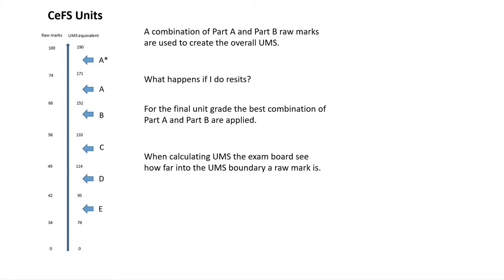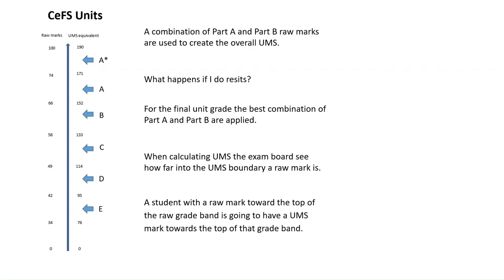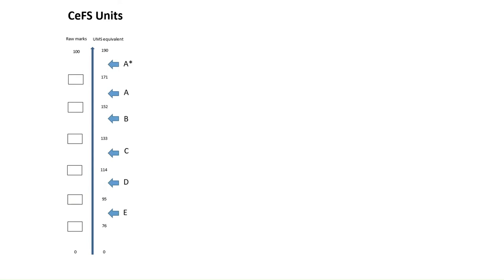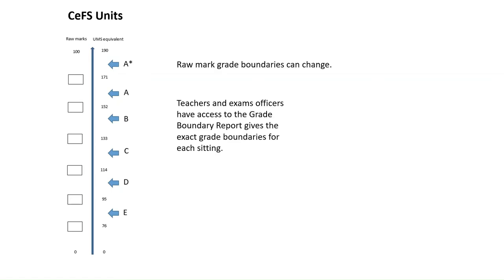When calculating UMS, the exam board sees how far into the UMS boundary a raw mark is. For example, if a student has a raw mark toward the top of the raw grade boundary, it's going to have a UMS mark towards the top of that band. For example, for D grades, it's between 42 and 49 raw marks out of 100. If you get 48, that'll be very close to the grade boundary, so you'd be looking at maybe 112 or 113 UMS equivalent points. It's very important to note that the raw mark grade boundaries change each session, whereas the UMS equivalent will not change each session. So 171 and above will always be an A star.